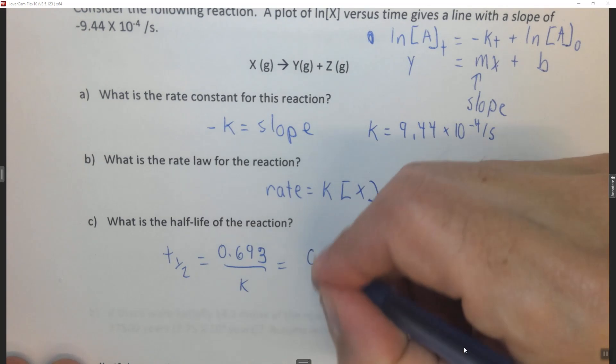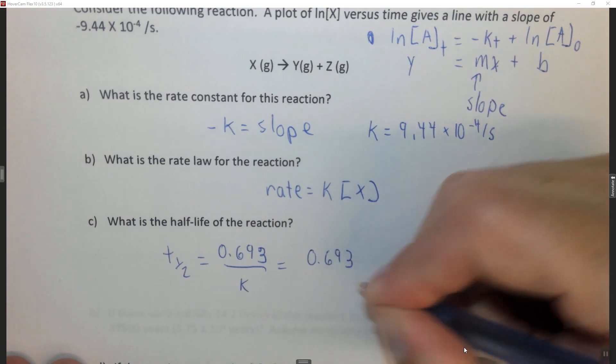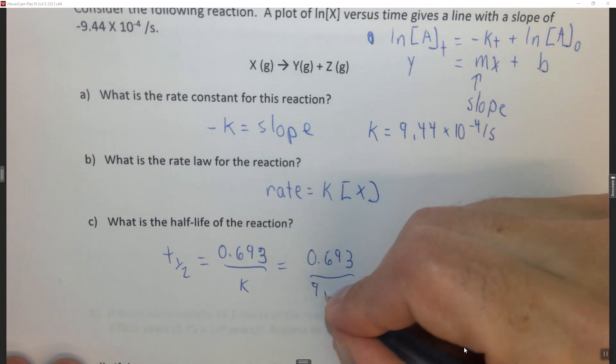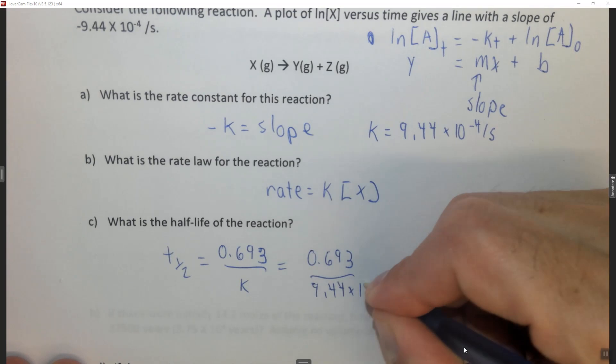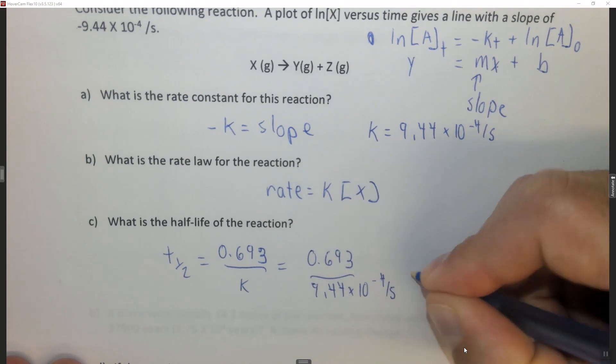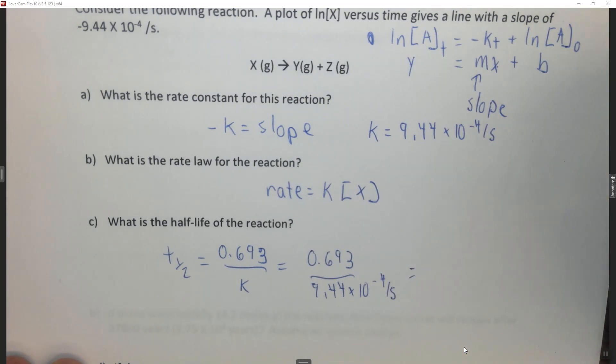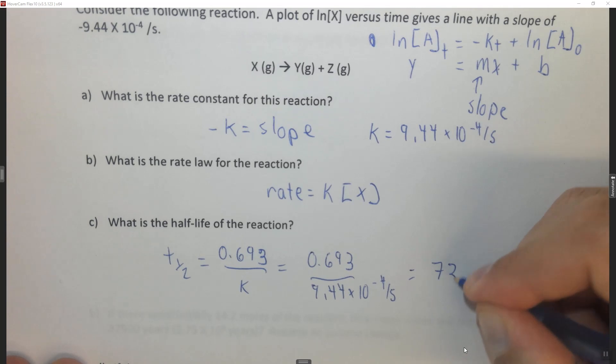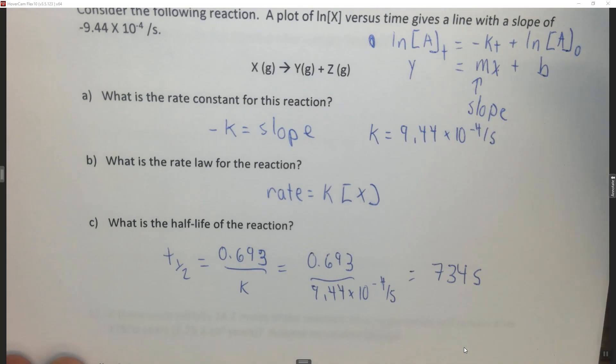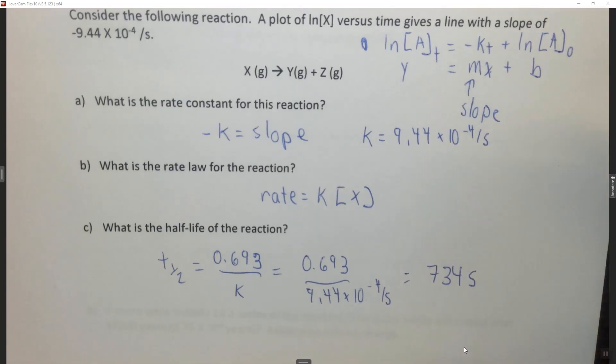So it's 0.693 divided by 9.44 times 10 to the minus 4 per second, which gives us a half-life of 734 seconds. So we can determine all of these things using the slope.